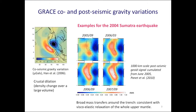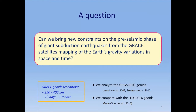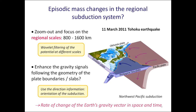From GRACE, we can detect the co-seismic and post-seismic signatures of giant earthquakes, as shown here for the Sumatra 2004 earthquake, with great sensitivity to broad scale mass variations like crustal dilation in the seismic and broad scale post-seismic, well explained by mantle relaxation. Here we focused on anomalies before a giant rupture, and we analyzed two sets of GRACE geoid models. I'm now introducing our method.